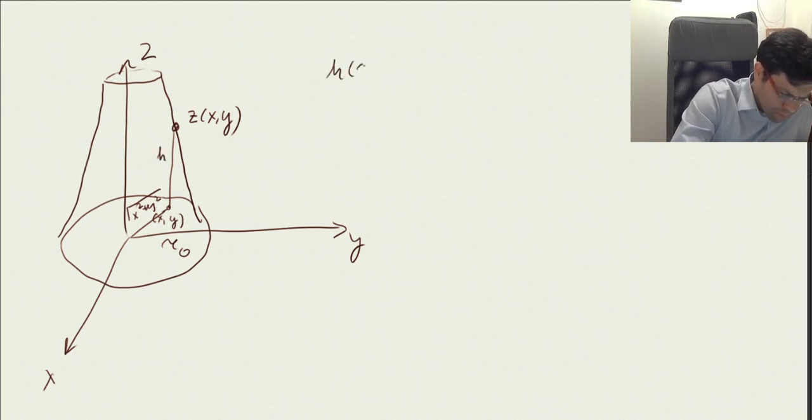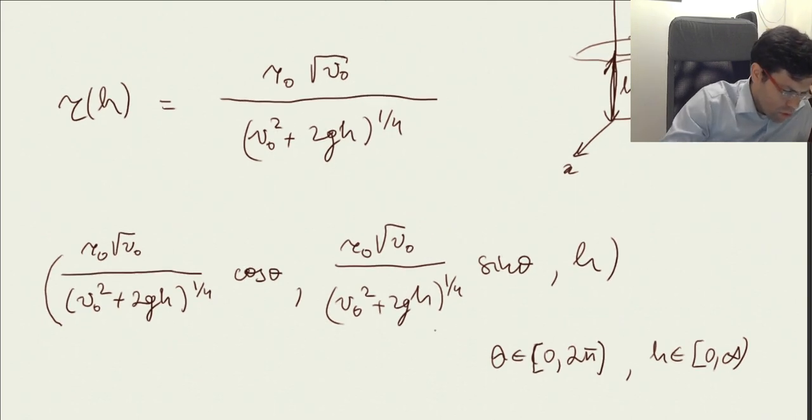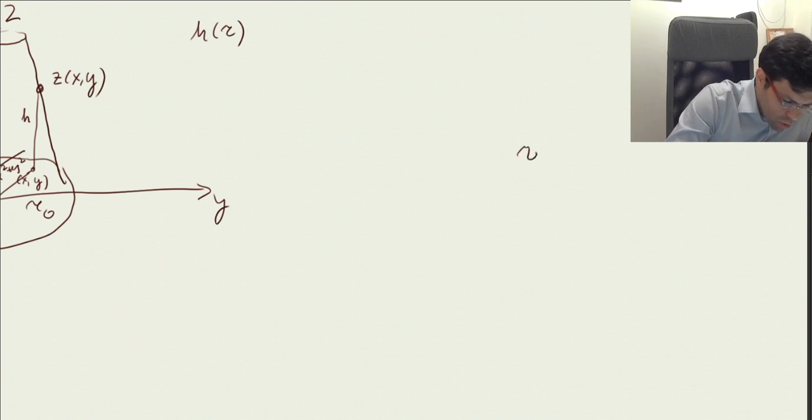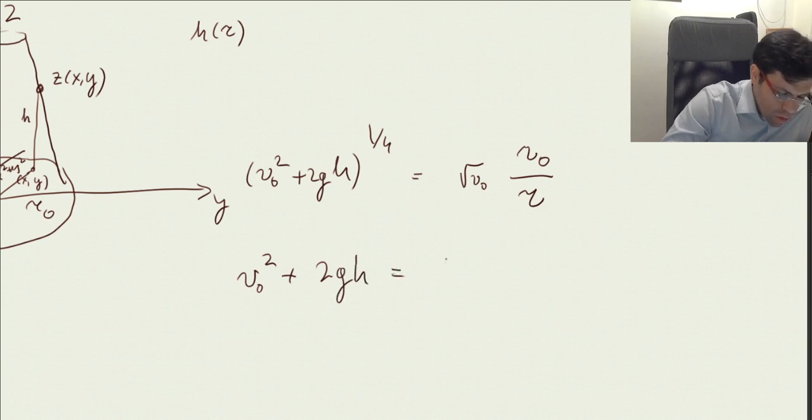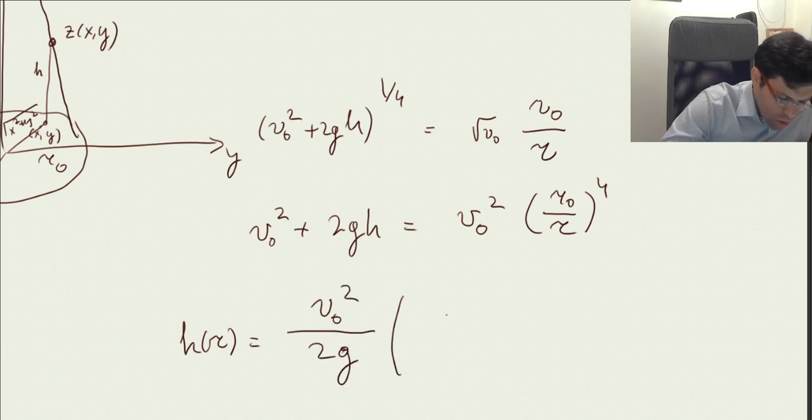It's not so hard as well, because if we go here, then this is r of h, but then we want to solve the equation. What we'll have is the following. We're going to have r0 over r, this is r of h, times the square root of v0 is supposed to be equal to v0 squared plus twice gh to the power of quarter. Now we take the fourth power here, so it's v0 squared plus twice gh equals v0 squared times r0 over r to the power of 4. If we want to find h as a function of r, then we move it aside, so we are going to have v0 squared divided by 2g, and here we're going to have r0 over r to the power of 4 minus 1.